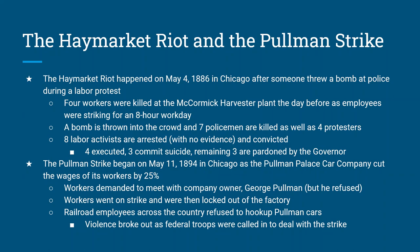The Pullman Strike began on May 11th, 1894, when the Pullman Palace Car Company cut worker pay by 25%, still in Chicago. When workers demanded to meet with the owner and understand why their pay had been cut, owner George Pullman refused to meet with them. Workers went on strike and the factory was locked. When news got out, railroad employees across the country refused to hook up Pullman brand cars to their trains and trains stopped around the country. Violence broke out, federal troops were called in to stop the strike, and eventually it ended — but the workers did not get their money back.